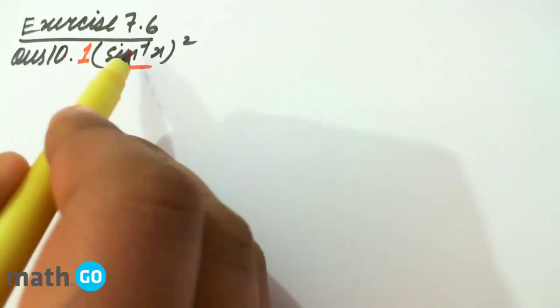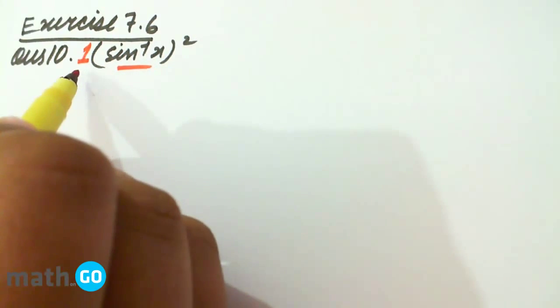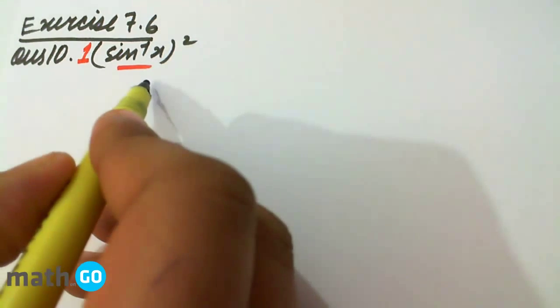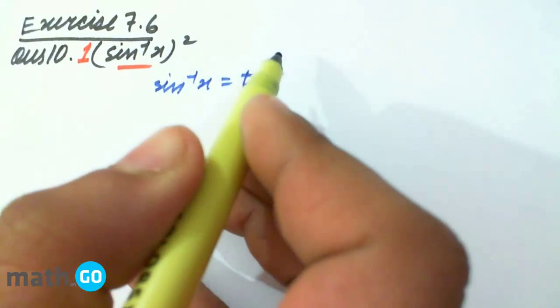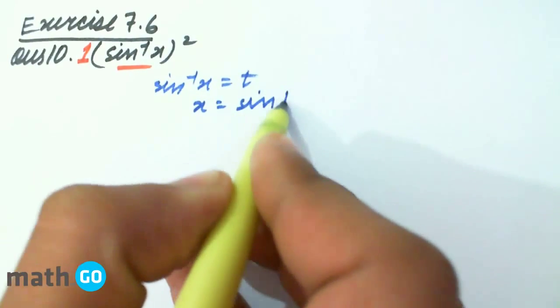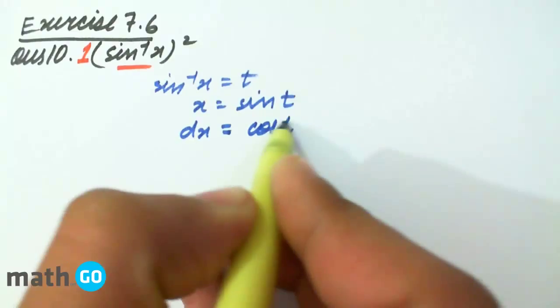We consider 1 to be the second function. Either we can do this, or to simplify it we can keep sin inverse x equals to t. What happens from that? We have x equals to sin t and dx equals to cos t dt.